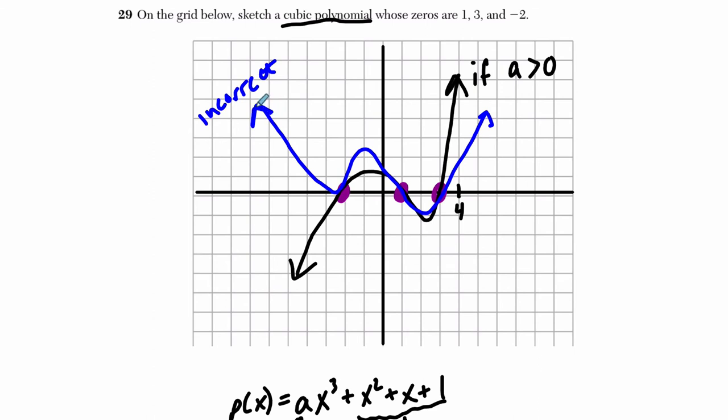For two reasons. The end behavior—that just means what this function's height is doing as x is getting really negative or really positive. In both cases for this function, as x goes towards positive infinity, y goes towards positive infinity. And as x goes towards negative infinity, y goes towards positive infinity.